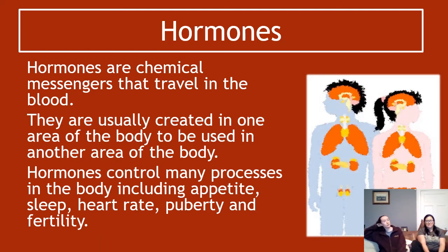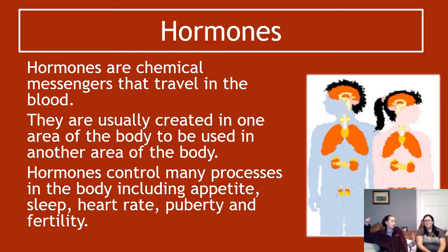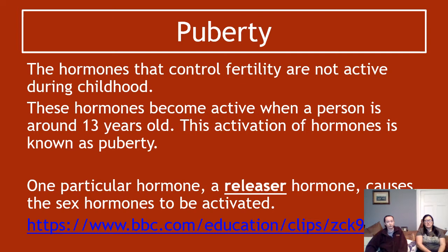Hormones being chemical messengers that travel in the blood is the key fact to know. They are generally made in one area of the body and then work somewhere else — most are produced in one area and work in totally other areas, generally from the brain to somewhere else in the body. These hormones are responsible for controlling most of the things that occur in your body — if something's happening in your body, a hormone has probably controlled it in some way.